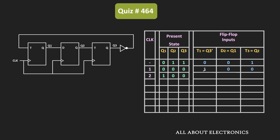Because since T1 is equal to 1, the output of the first flip-flop will toggle. Previously, since Q1 was 0, after the clock pulse it will become 1. Similarly, since D2 input is 0, Q2 output will remain 0 — because for the D flip-flop, the output is same as the input. And since T3 is 0, Q3 output will also remain 0. So after the second clock pulse, the outputs Q1, Q2, and Q3 will be equal to 100. For these outputs, the new inputs for the three flip-flops will be equal to 110.